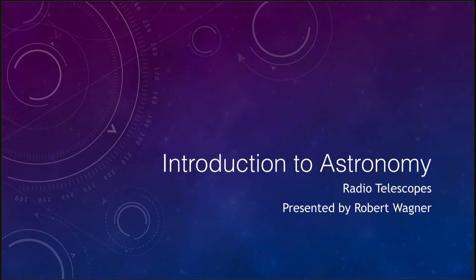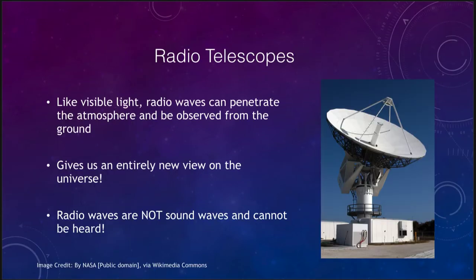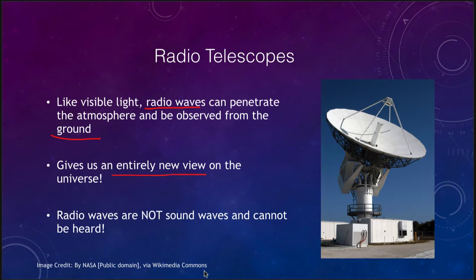Let's take a quick look at radio telescopes. What is a radio telescope? We have to recall that radio waves will also penetrate the atmosphere and we can observe them from the ground. So radio telescopes can be based on the ground just like optical telescopes. They give us an entirely new view on the universe — a completely different wavelength of light, with very long wavelengths compared to optical light and very low energy photons.